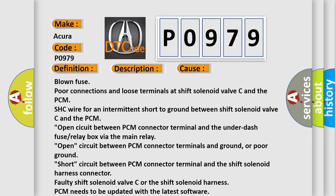Open circuit between PCM connector terminal and the under-dash fuse relay box via the main relay, open circuit between PCM connector terminals and ground or power ground, short circuit between PCM connector terminal and the shift solenoid harness connector, faulty shift solenoid.